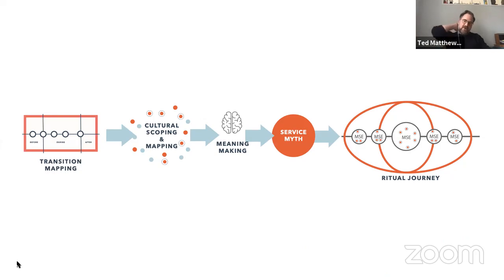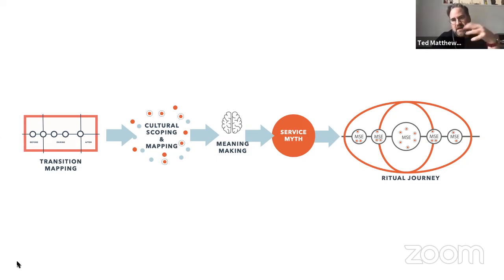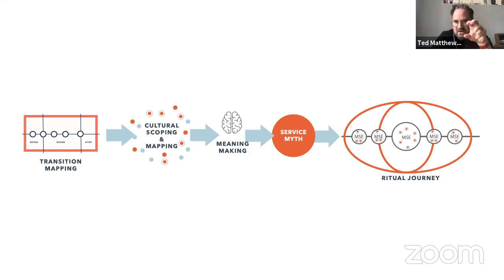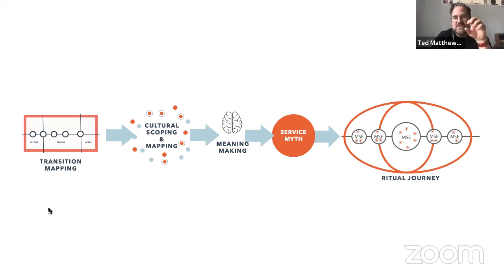Just to give an overview of the process — and this is very simplified — what we're trying to do is create customer journeys where we're understanding transitional phases in the customer or service experience. In this case, it could be the buildup to this digital webinar, the transitional spaces in the webinar, the close, and then what happens afterwards. Then we're doing some form of cultural scoping and mapping — trying to understand what cultural material we've got to work with, what anxieties we find, what stories we tell about ourselves. These myths are really metaphors about who we think we are. And then we're designing a ritual service journey full of meaningful service encounters — like a chain of interactions.